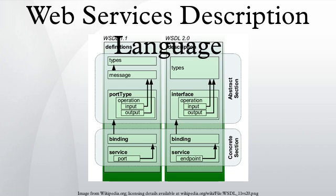Messages are abstract descriptions of the data being exchanged, and port types are abstract collections of supported operations. The concrete protocol and data format specifications for a particular port type constitutes a reusable binding, where the operations and messages are then bound to a concrete network protocol and message format. In this way, WSDL describes the public interface to the web service.